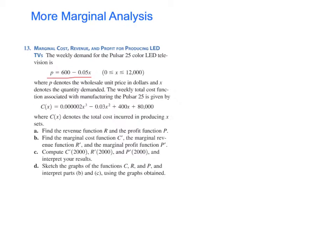is P equals 600 minus 0.05X. And that applies for production level up to $12,000. P is the wholesale unit price in dollars and X is the quantity demand. The weekly total cost function associated with manufacturing the Pulsar 25 is given by this function C of X. And this is the total cost incurred producing X TV sets.